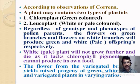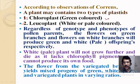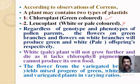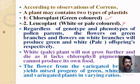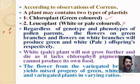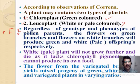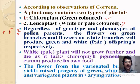According to Correns' observation, a plant may contain two types of plastids: chloroplasts, which are green, and leukoplasts, which are white and pale and cannot synthesize food. Regardless of the genotype and phenotype of the pollen parent, flowers on green branches and flowers on white branches will produce green and white offspring respectively. The pollen parent's genotype or phenotype plays no role in the production of offspring.